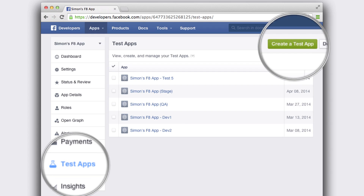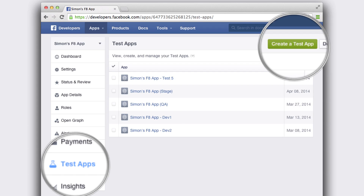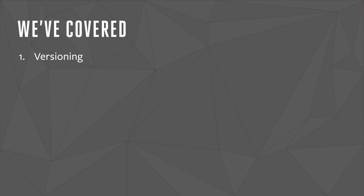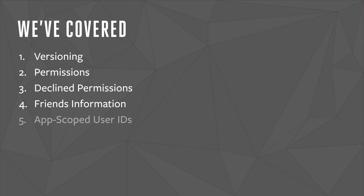Test Apps are really simple to create from within your apps dashboard. Each Test App's settings are copied from your production app, and Test Apps share the same app-scoped user ID namespace as your production app, meaning you can share a copy of your production database when testing and developing. The Business Mapping API lets you map a person's IDs across all the apps they use that your business owns. So hopefully by now you're armed with all the information you need to upgrade your app to Graph API V2.0 or V2.1. We've covered how versioning works and the timelines to upgrade, changes to permissions, how to handle declined permissions, changes to how your app accesses friends information, and app-scoped user IDs.